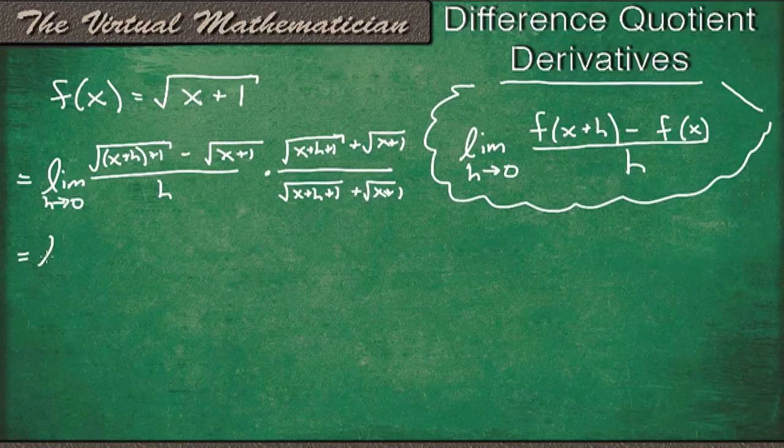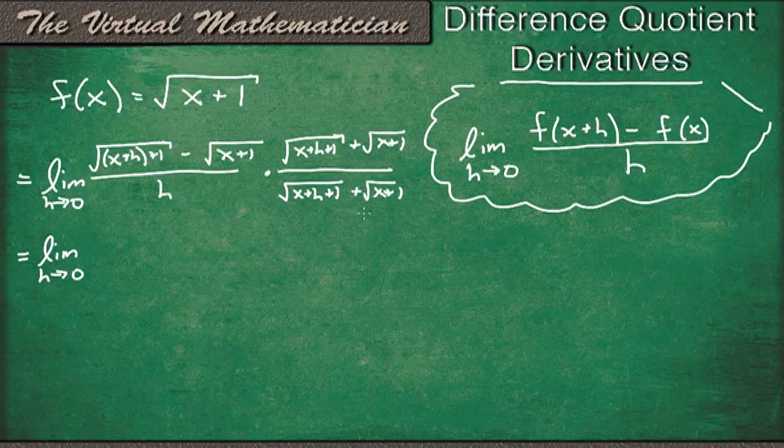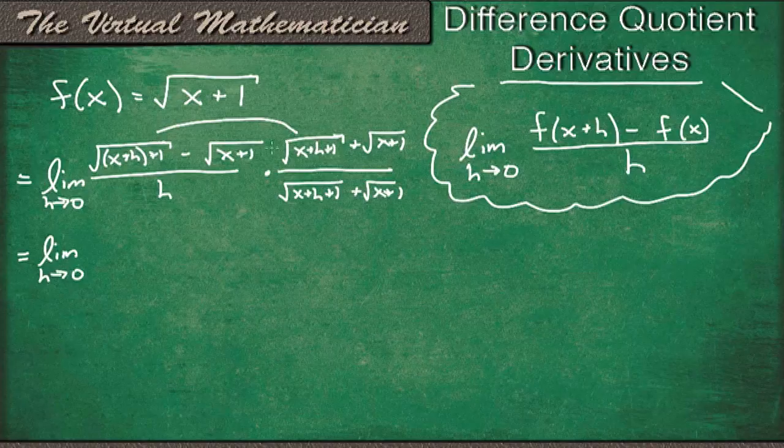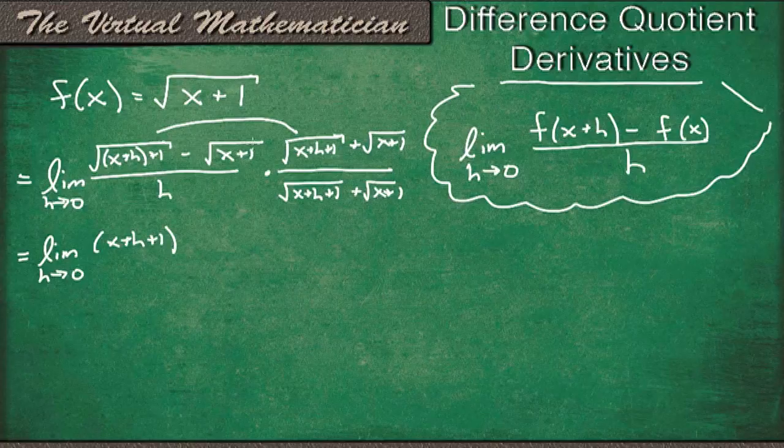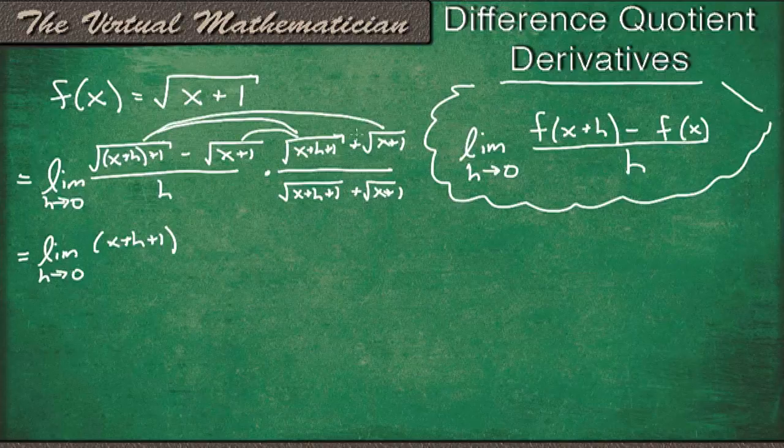Now we can simplify, and we're going to get the limit as h goes to 0 of these two multiplied together. So since they're the same, the square roots are just going to cancel, and we're going to get x plus h plus 1. Then we have the middle two, and the outer two. Now notice that these bases are the same, that we're multiplying together.